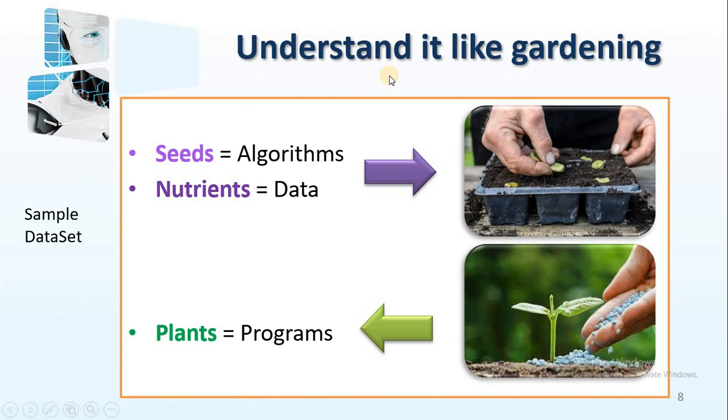You can understand the machine learning just like gardening. What we do in the gardening? We have the seeds and we need to supply nutrients to the seeds. After some time, we will get the plants. In the same way, seeds are nothing but algorithms. We can compare seeds with algorithms and nutrients means data. We are giving data and algorithms to the computer. As a result, we are getting the programs.